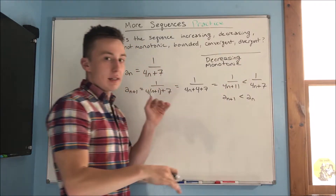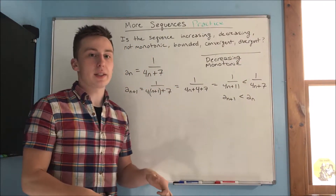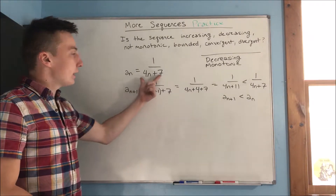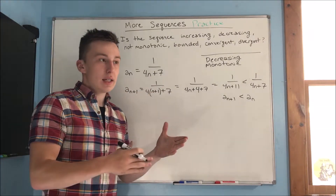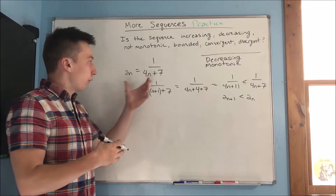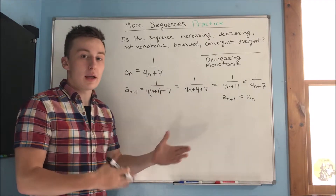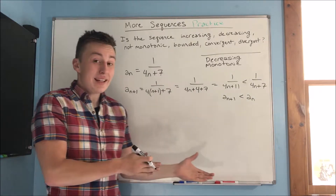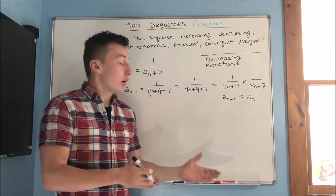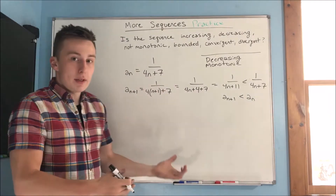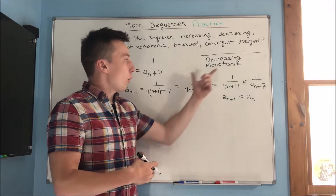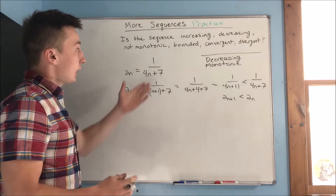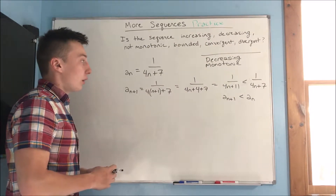Since it's purely decreasing, it is monotonic — it's never changing direction, it's always going to be decreasing. And because we're using n in general here — not just one specific term — we're talking about all terms. You can plug in any value of n and it's still going to be decreasing, so we know that it is monotonic.